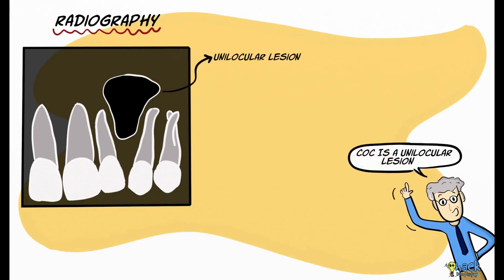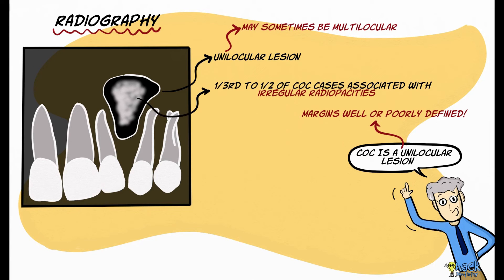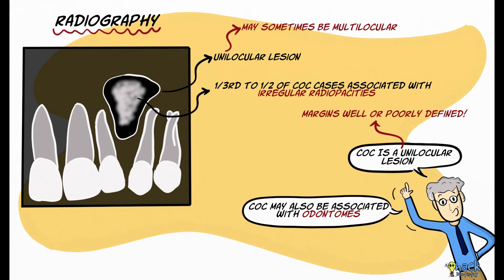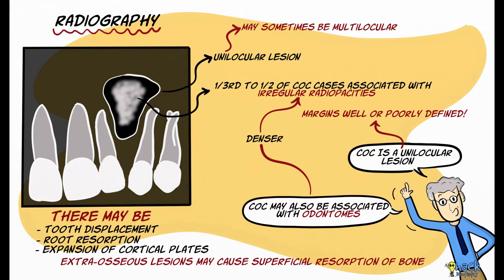Radiographically, these lesions are typically unilocular with margins that can be well circumscribed or poorly defined, and may occasionally be multilocular. One third to half of cases are associated with irregular radiopacities; when associated with odontomas, the radiopacities may be denser. There may be tooth displacement, root resorption, and expansion of cortical plates. Extraosseous lesions may cause superficial bone resorption manifesting as saucer-shaped radiolucencies.